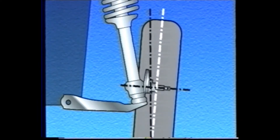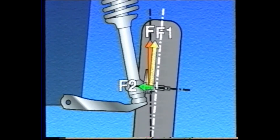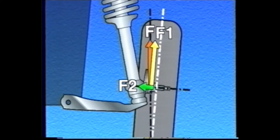The vertical load from the road, F, is divided into force F1, which is vertical to the axis of the spindle, and force F2, which is parallel to the axis of the spindle. F2 forces the wheel inward, helping to prevent the wheel from slipping off the spindle.